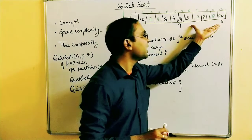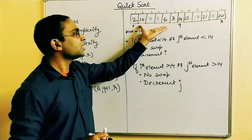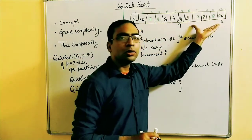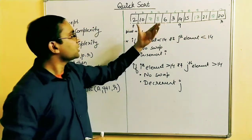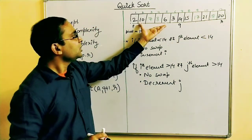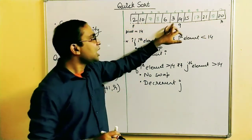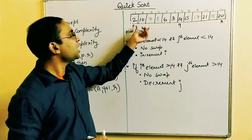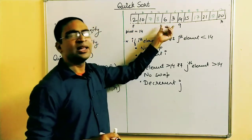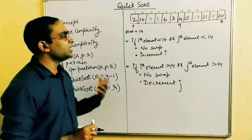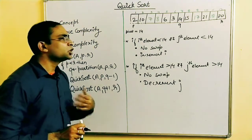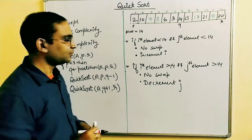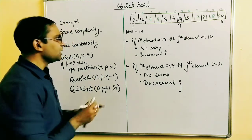We call QuickSort recursively on the left partition and then on the right partition. On the left side, the current P and R define the new range, we find Q again, and partition into two further parts. This process continues recursively until we have a fully sorted list.